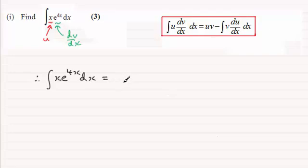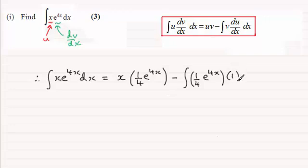So we have one part, x, multiplied by the integral of the other part. If you integrate e to the power 4x, you get a quarter e to the power 4x. Then it's minus the integral of the part you just integrated—that's a quarter e to the power 4x—multiplied by the differential of the first part. The differential of x with respect to x is just 1, and we integrate all of that with respect to x.